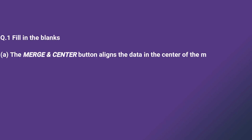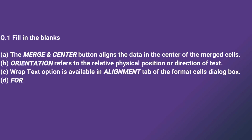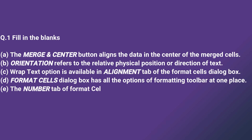First one is fill in the blank. The blank button aligns the data in the center of the merge cell — Merge and Center. Second one: the blank refers to the relative physical position or direction of a text orientation. The Wrap Text option is available in the blank alignment tab of the Format Cells dialog box. Fourth one: the Format Cells dialog box has all the options of the formatting toolbar at one place. Last one: the Number tab of the Format Cells dialog box has a fraction option.